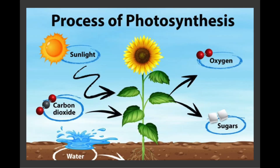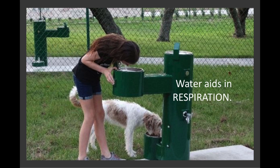In plants, water aids in photosynthesis, the process by which plants convert sunlight into food. During the first stage of photosynthesis, water splits into hydrogen and oxygen atoms. Oxygen is released into the atmosphere, while hydrogen is used in the rest of the chemical reaction to produce energy for the plants. In man and animals, water aids in respiration. Cellular energy is released as a byproduct of this process. Water also helps flush waste products out from the body. Without a water supply, organisms cannot access oxygen and would die.